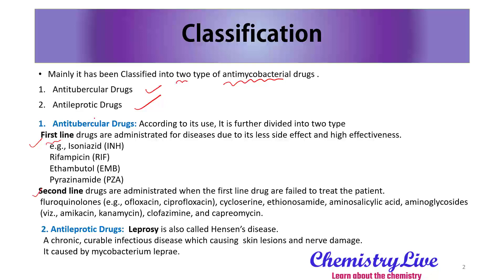What is meant by first-line drugs? First-line drugs are administered for the disease due to their less side effects and high efficacy or effectiveness. Examples include isoniazide, rifampicin, ethambutol, and pyrazinamide.